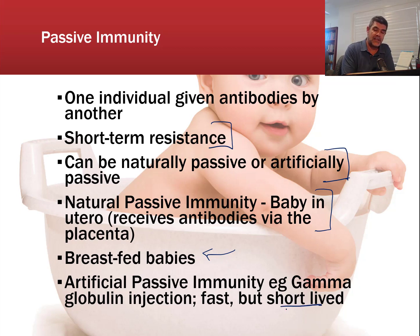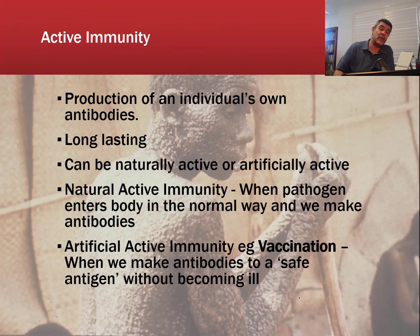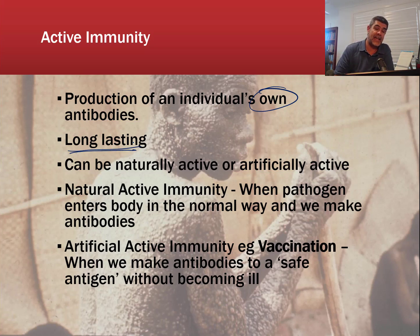The problem with passive immunity is that it is short-lived — we're not making the response in our own bodies, just getting a top-up. Active immunity is when we actually produce our own antibodies. Because we do it ourselves, it's much longer lasting — our cells know which particular antibody matches which particular antigen, making it much more efficient in tackling a particular pathogen.